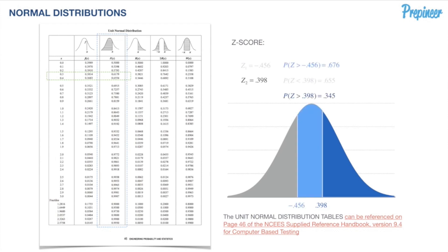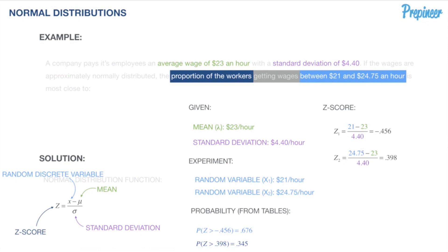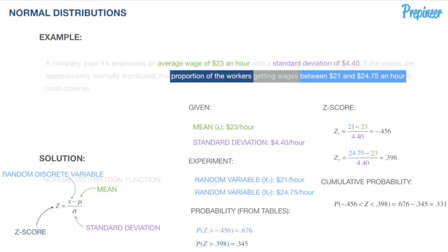We have our two key values: 0.676 from our first z-score, and 0.345 for the tail beyond our second z-score. The cumulative banded probability between z1 = -0.456 and z2 = 0.398 is 0.676 minus 0.345, giving us 0.331. Therefore, the proportion of workers getting wages between $21 and $24.75 is 33.1%.